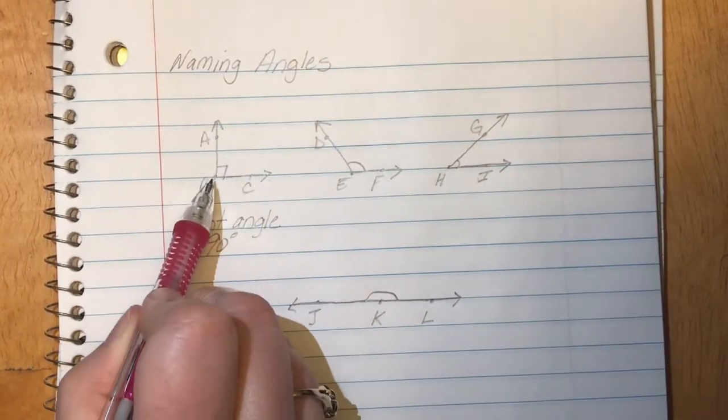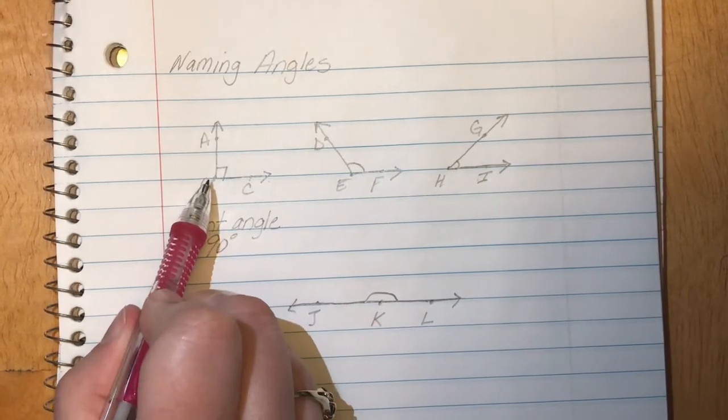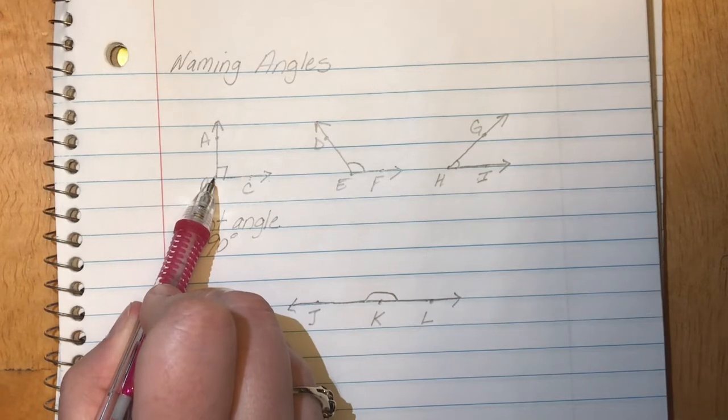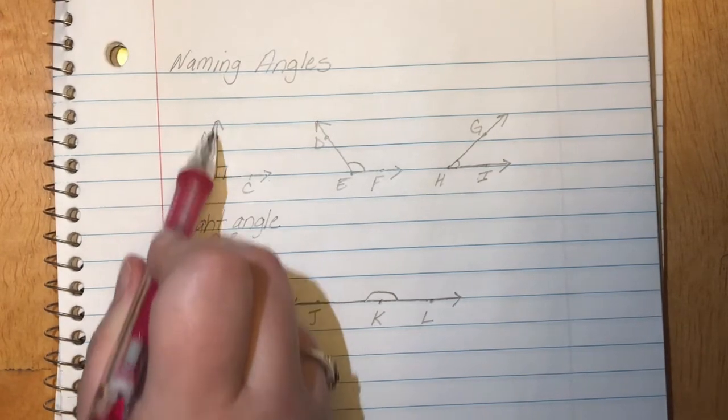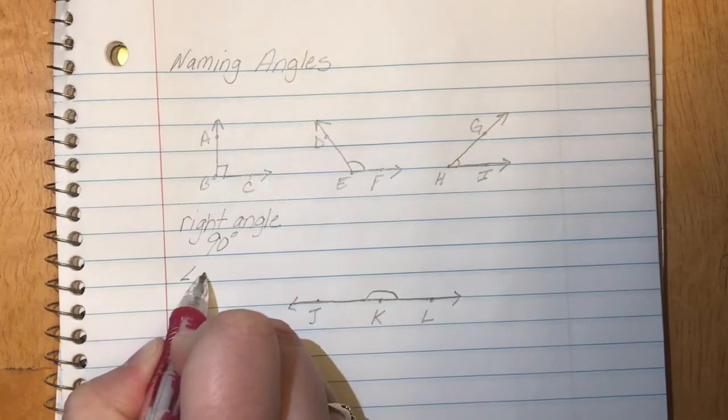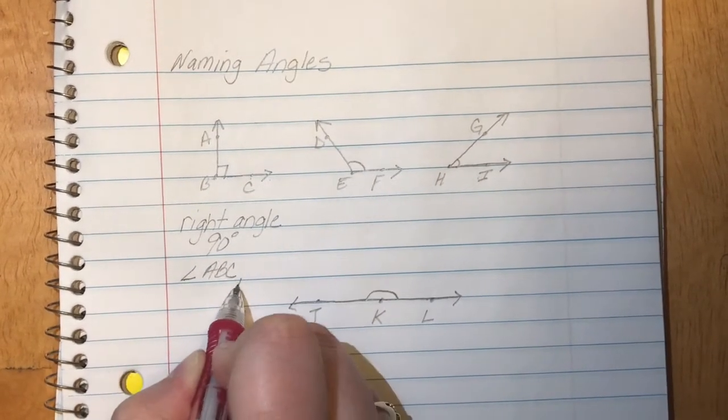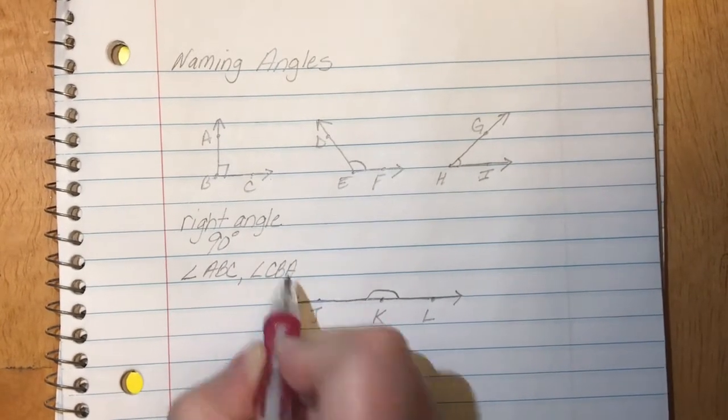But notice either way the B has to be in the center of the letters because that is the vertex of this angle. It's where these two rays meet each other. So we can write this as angle ABC or we can write this as angle CBA.